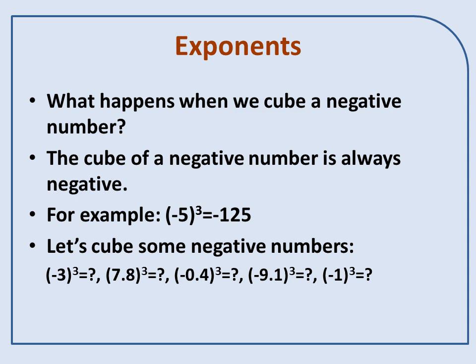The cube of a negative number is always negative, because a negative times a negative is positive, times another negative is negative. For example, minus 5 cubed is minus 125. Here's some negative numbers for you to cube.